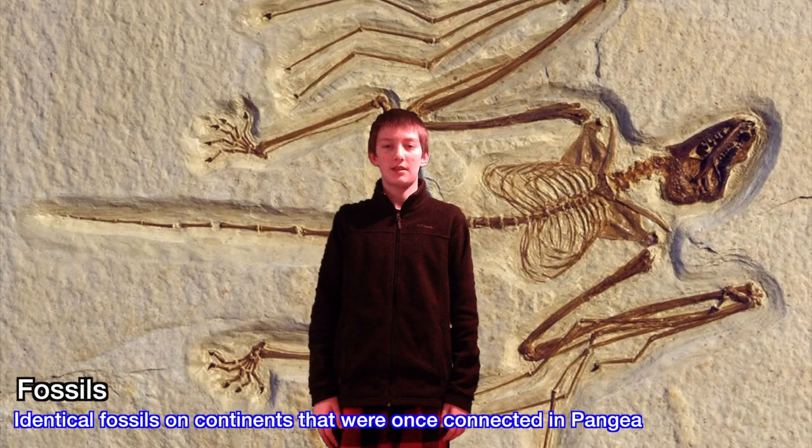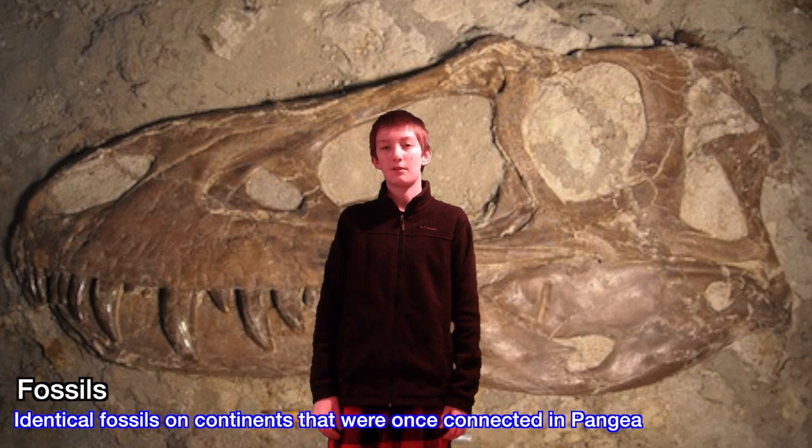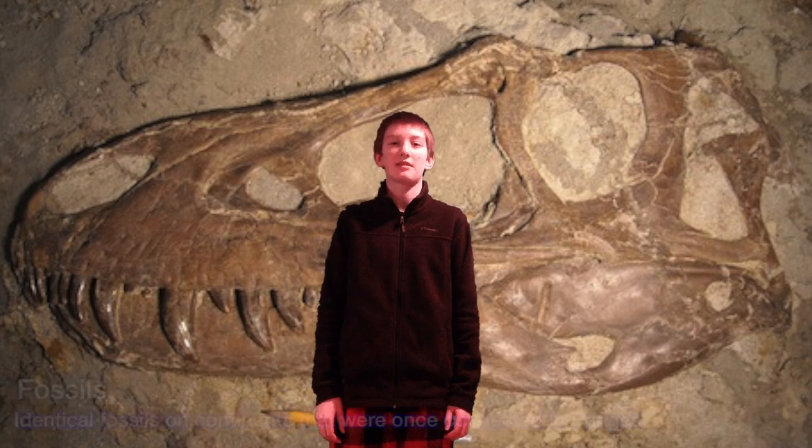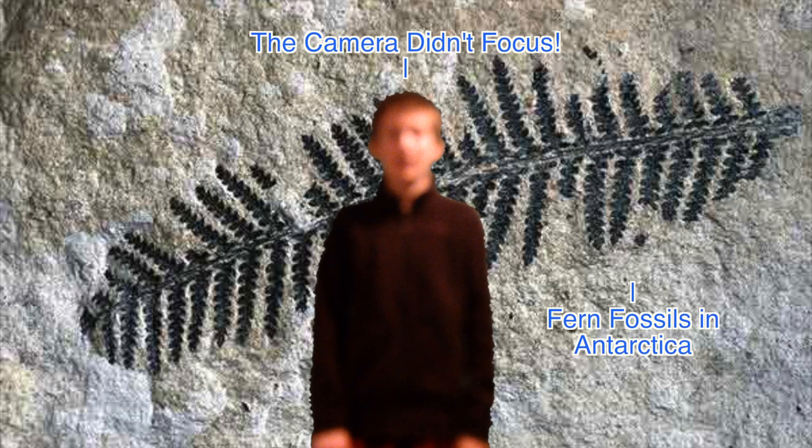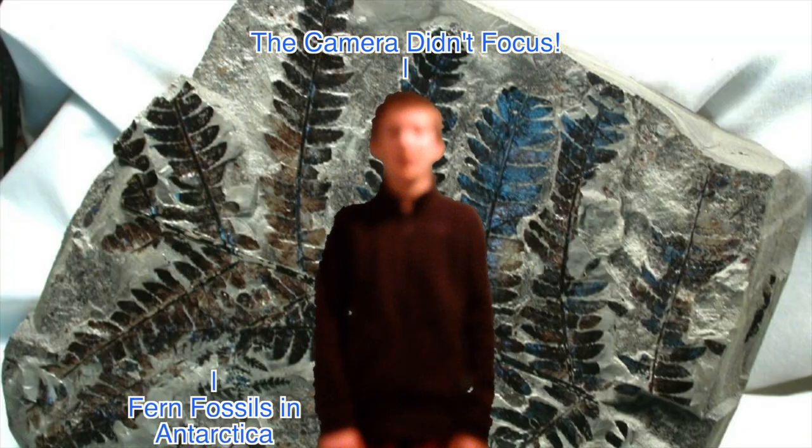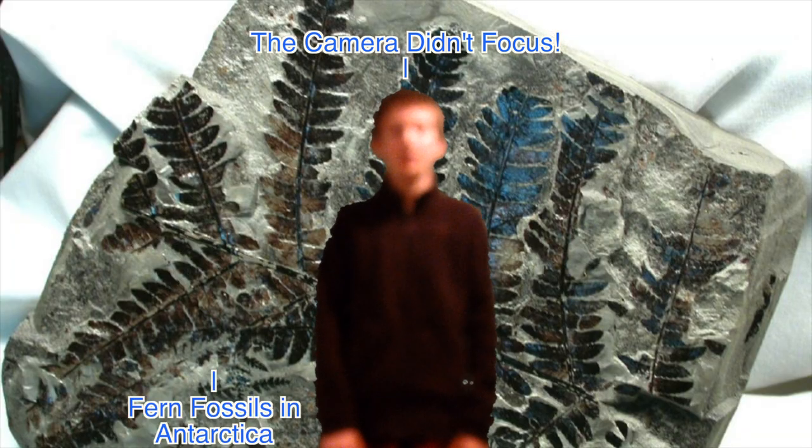One piece of evidence of Pangea is that similar, if not identical, plant or animal fossils have been found on multiple continents. An example of this is that a tropical fern fossil that could have only grown in a tropical climate was found in Antarctica. This shows that Antarctica used to be closer to the equator.